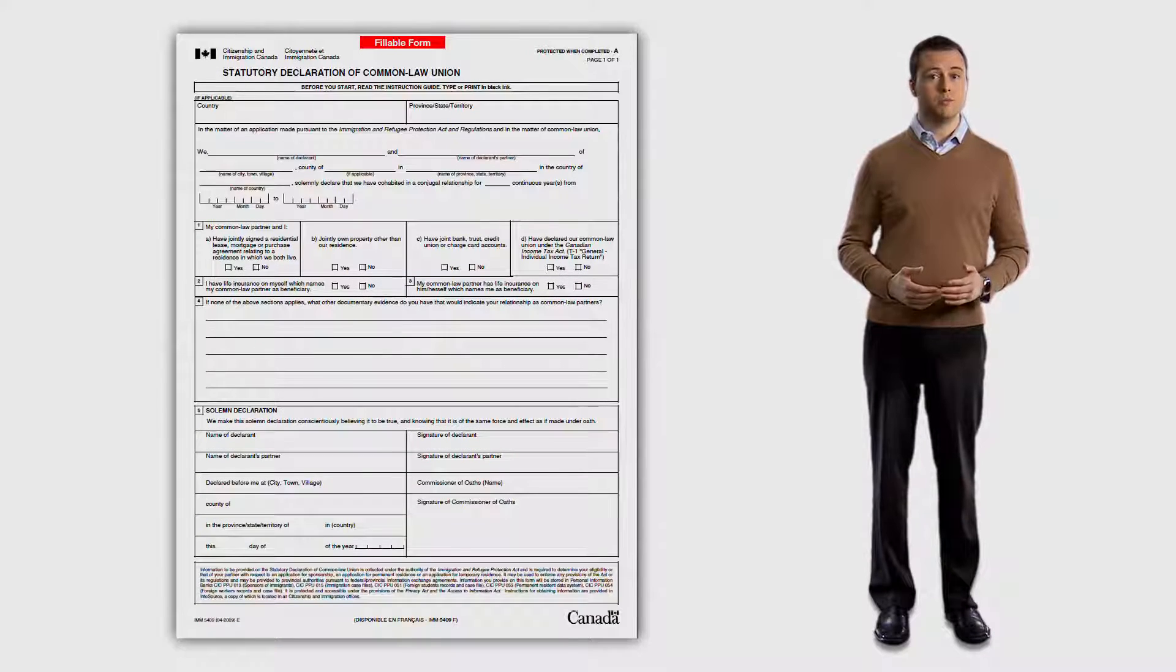What do you do if you can no longer obtain an original document, like a birth certificate, that is needed for application? If you are in this situation, you must provide a statutory declaration or affidavit. To find out when and how to provide a statutory declaration or affidavit, refer to the guide in your application kit. If you cannot provide an original document that is required, tell us why. Do not leave the section blank and do not write N.A.